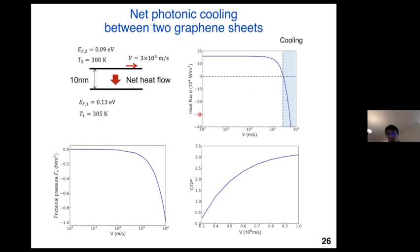As a prototypical system, we consider two suspended graphene sheets at different temperatures: one at 300 Kelvin, the other 5 degrees higher, with 10 nanometer separation. We consider a reasonable drift velocity of Dirac fermions of 0.3 times the Fermi velocity. In this case, the net heat flow flows from the lower temperature to the higher temperature, thereby achieving a heat pump. The left figure shows the heat flux from the lower graphene to the higher graphene as a function of velocity — as velocity increases, the heat flow direction flips, indicating cooling. When the velocity exceeds 0.4 of the Fermi velocity, the coefficient of performance can exceed one, meaning we can achieve net cooling.